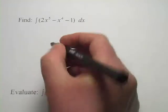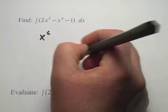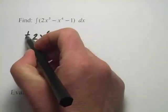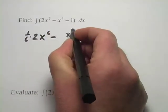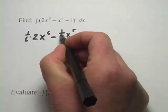So let's try the 2x to the fifth first. We're going to raise the power by one, so that's x to the sixth. We've got our two here, and then we multiply by the reciprocal, so that's one-sixth. And then we have minus, and x to the fourth, that would be x to the fifth, raising the power, and then multiplying by the reciprocal, so times one-fifth.